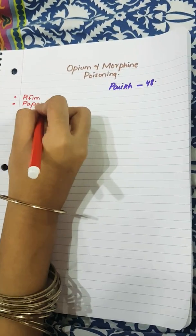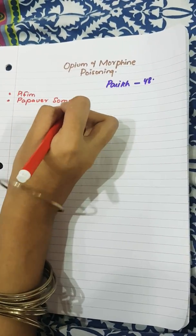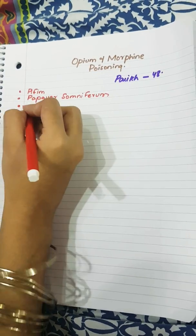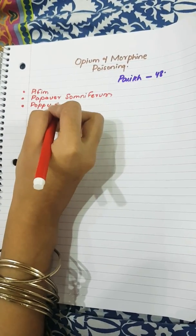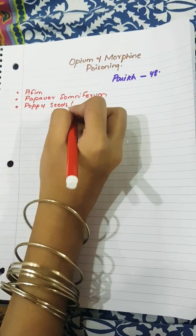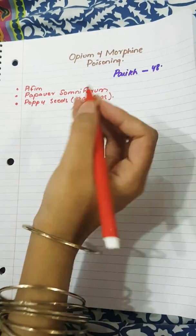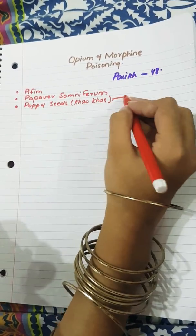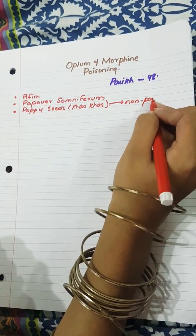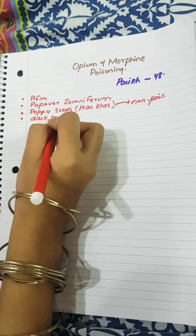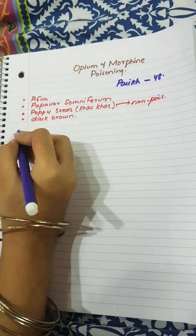It is collected from the plant known as Papaver somniferum. And we also need to know this is an MCQ point: that the poppy seeds or khas-khas, the only part of the plant that is non-poisonous. The fourth thing we need to know is that the seeds are of dark brown color. This is an OSCE point and important for identification.